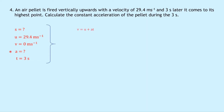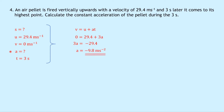Writing down our equation, we have V equals U plus AT. Substituting in the numbers, we get zero equals 29.4 plus 3A. So if I want to get 3A on its own, I get 3A equals minus 29.4 by taking away 29.4 from both sides, and then dividing both sides by 3 gives me A equals minus 9.8 meters per second squared, which is acceleration due to gravity. So that's what you'd expect if there's an object traveling up and back down.